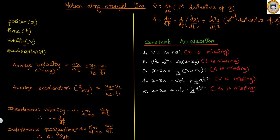Similarly, acceleration is the rate of change in velocity. The instantaneous acceleration is the limit as delta t tends to zero of delta v over delta t, which equals dv over dt. Since v is the first derivative of x with respect to t, acceleration is the second derivative of x with respect to t — that is d²x over dt².